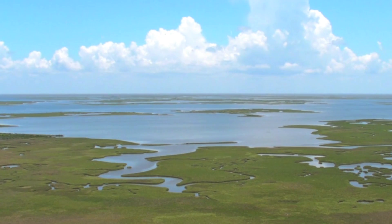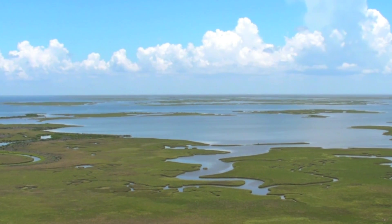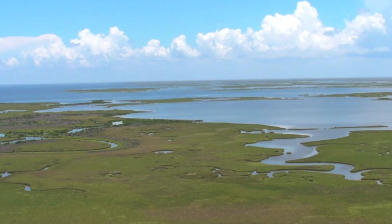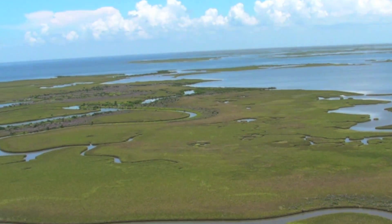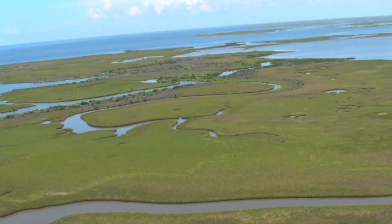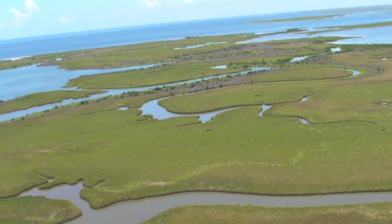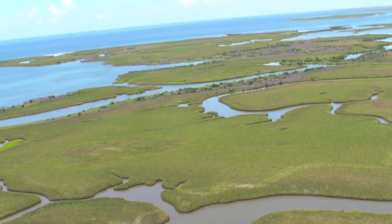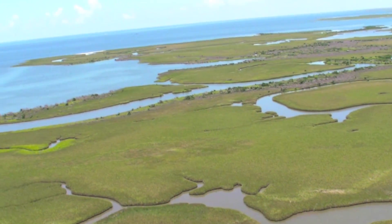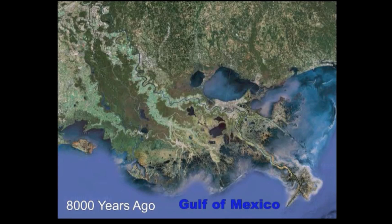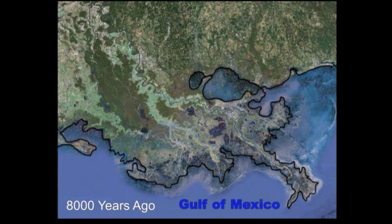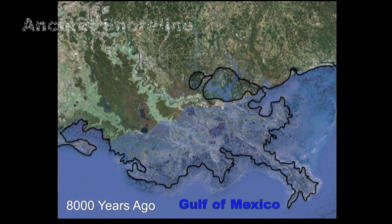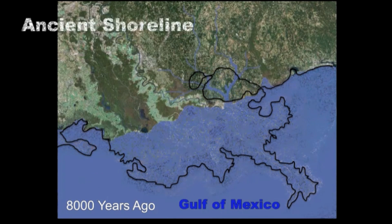To understand how subsidence affects the Mississippi River Delta and its wetlands, we first have to go back a few thousand years. Because glaciers were melting eight thousand years ago, sea levels were higher at that time, so much of the present-day coast was under water.